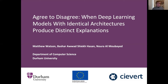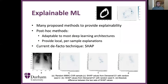This work was supported by the ERDF and CVERT Limited. Recently, a lot of work has gone into the field of explainable machine learning with many proposed methods to provide explainability. Perhaps some of the most popular methods are post-hoc methods, which are applied after the training of a black box model to explain individual decisions. They're popular because they're adaptable to most deep learning architectures and they provide local per-sample explanations.